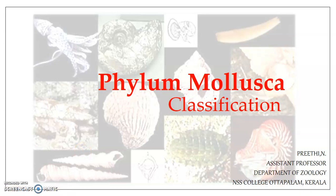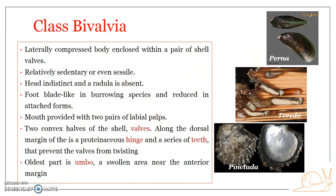Welcome to the last session on the classification of Phylum Mollusca. Here we are going to deal with Class Bivalvia, otherwise known as Pelecypoda or Lamellibranchiata. The name bivalvia comes from the shell of the mollusk being formed of two valves. Bivalvia is unique in this regard and they are the second largest group of mollusks, including clams, oysters, mussels, and scallops.